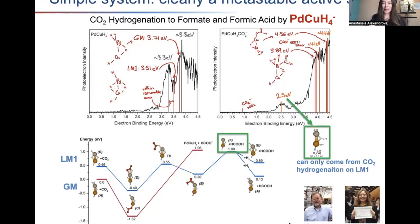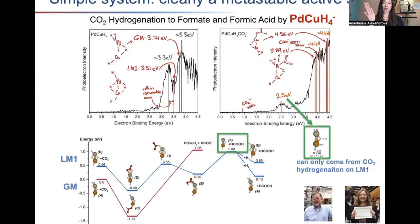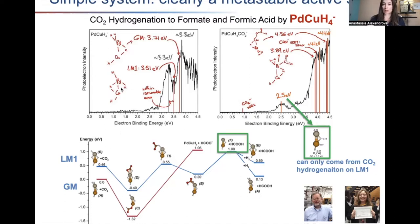Here we have a palladium copper hydride anion — mass-selected, produced by Kit Bowen — who then obtains photoelectron spectra of these clusters, first without reagents. For students: photoelectron spectroscopy uses the photoelectric effect — you hit this thing with a high-energy laser, electrons are photo-detached with different kinetic energies depending on which orbital they came from, and by time-of-arrival you back out the orbital energy. It's effectively a fingerprint of your orbital structure.